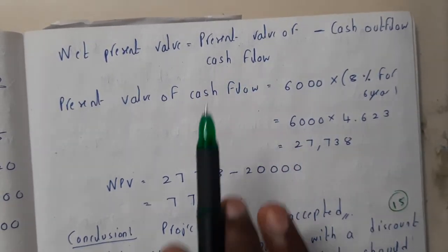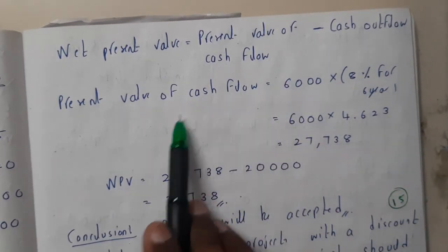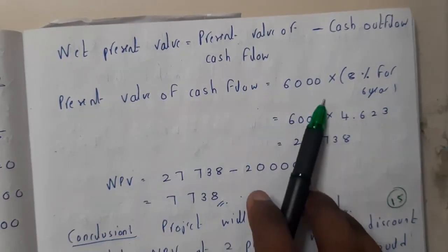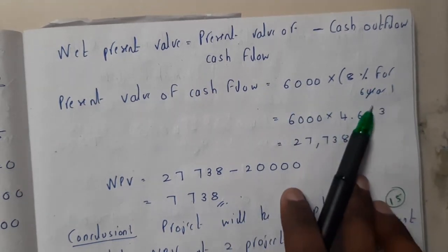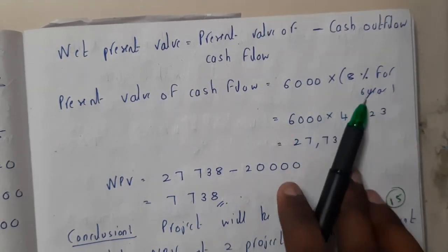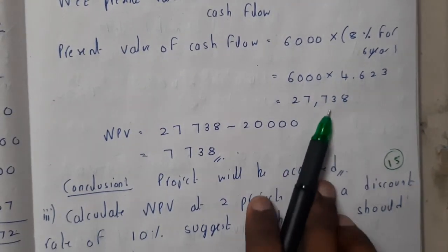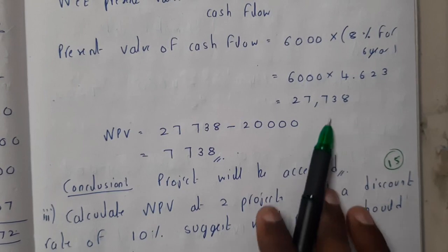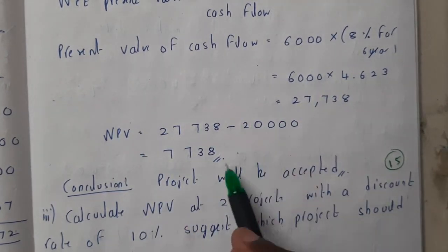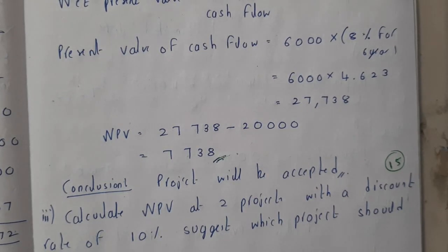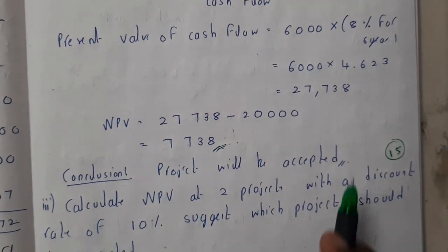We don't know the present value of cash inflow directly — we only know the net cash inflow. So we use the formula: net cash inflow multiplied by the annuity factor. That is 6,000 into 4.623, which gives us 27,738. Subtracting the initial investment of 20,000, we get an NPV of 7,738.